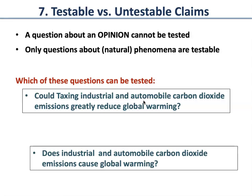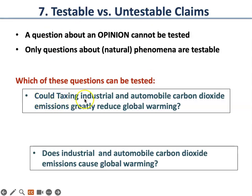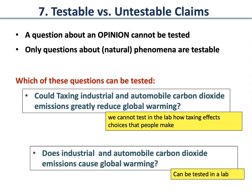This is testable versus untestable claims. A question about somebody's opinion cannot be tested. A question about a natural phenomenon — like the toaster or GFP — is testable. For example: 'Could taxing industrial and automobile carbon dioxide emissions greatly reduce global warming?' versus 'Does industrial and automobile carbon dioxide emissions cause global warming?' The second can be tested in a lab. The first cannot, because taxing involves how people make choices based on policy — that is not something you can test in a lab.